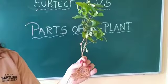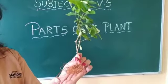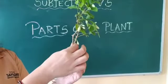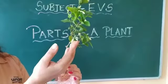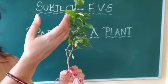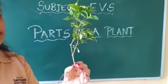Let's have a quick recap children. This is a root. Stem. Leaves. Buds, which are going to turn into beautiful flowers.